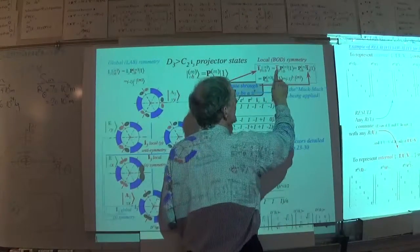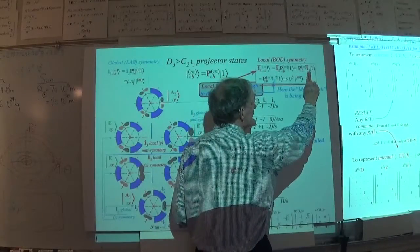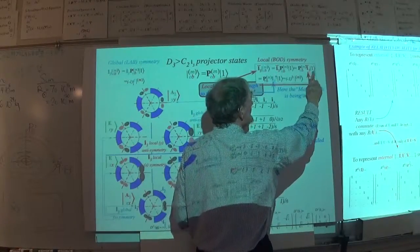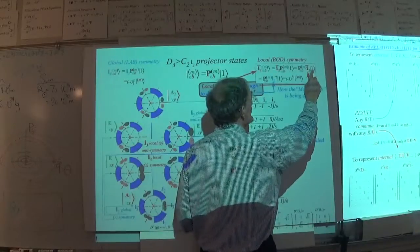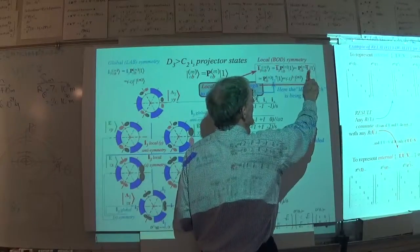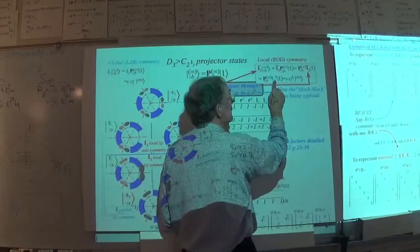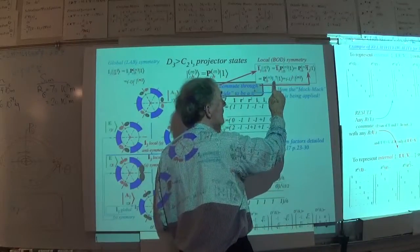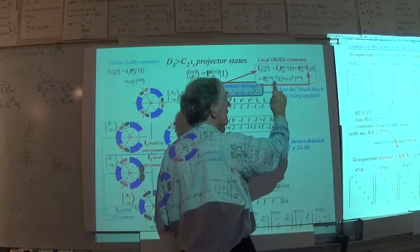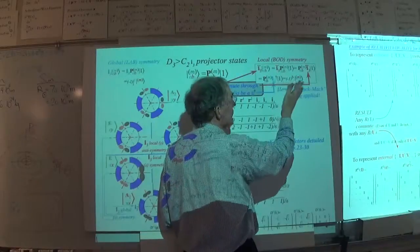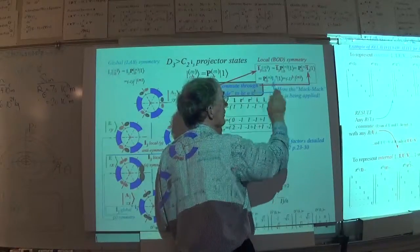So this thing can go right on through that projector and sit on this side. Then the Mach-Mach principle tells you that what you're going to get now is the inverse of that in the old laboratory terminology. So I put a dagger on it just to make it an inverse.